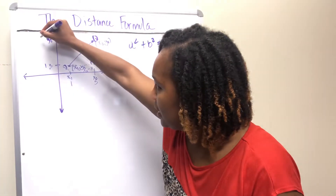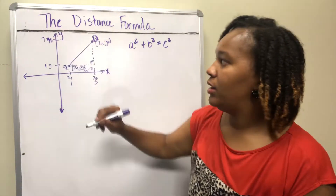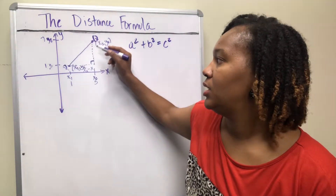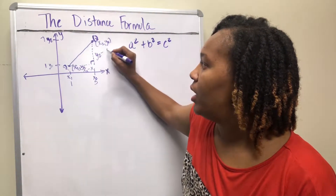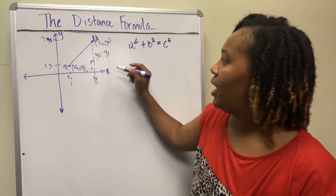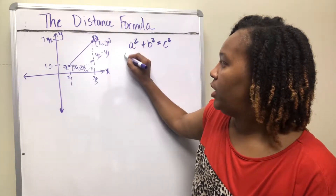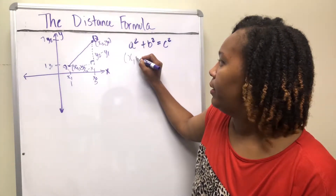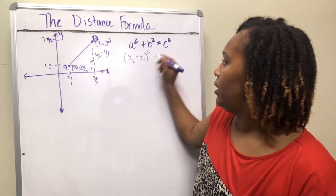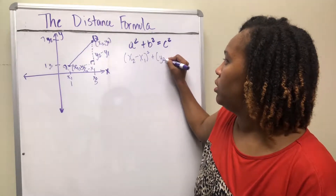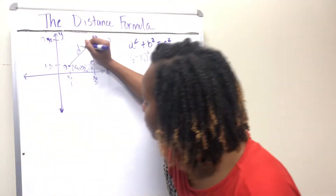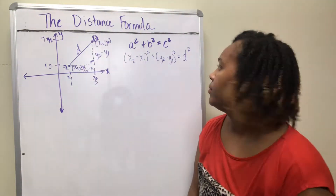The same applies to the vertical side. If y1 is 1 and y2 is 7, the length of that side is 7 minus 1, which is 6. So the vertical side is y2 minus y1. It doesn't matter which you call a or b: one side is (x2 − x1) and the other is (y2 − y1), and instead of c, we use d to represent the distance.